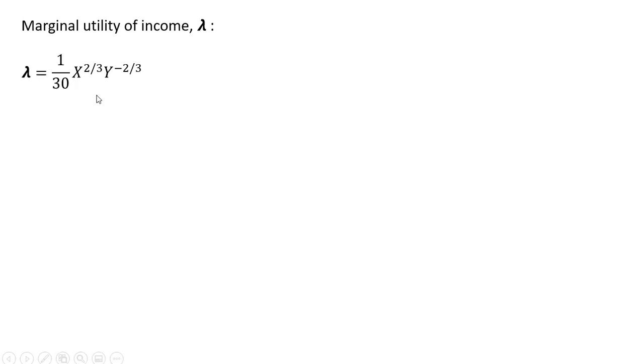To get the marginal utility of income, we can evaluate lambda at our utility-maximizing values for x and y. Here's one of our expressions for lambda. Plugging in 40 for x and 40 for y, lambda equals 1 over 30. That is the marginal utility of income. It tells us how much utility will increase if the budget constraint is relaxed by one dollar — in other words, if the consumer had one more dollar of income.